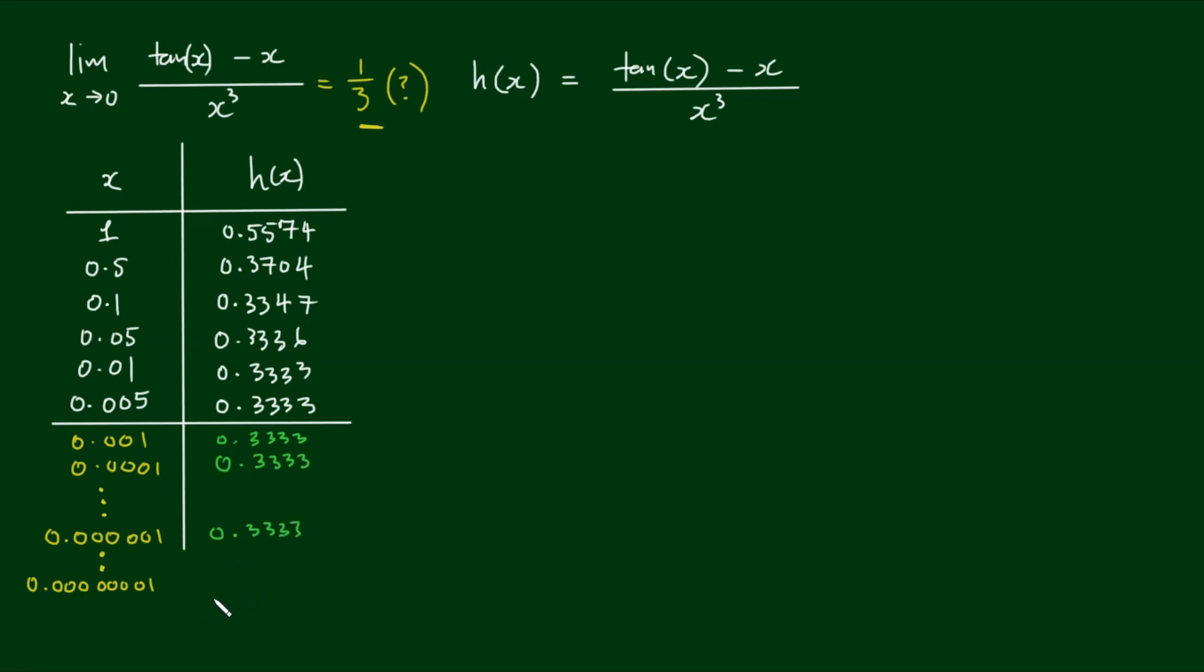Now, what about the final one? Well, when I plugged this value in, I actually get 0. So we're getting very close to 0 indeed, and we get the answer of 0. So what is the answer? Is it 1 third, or is it 0?